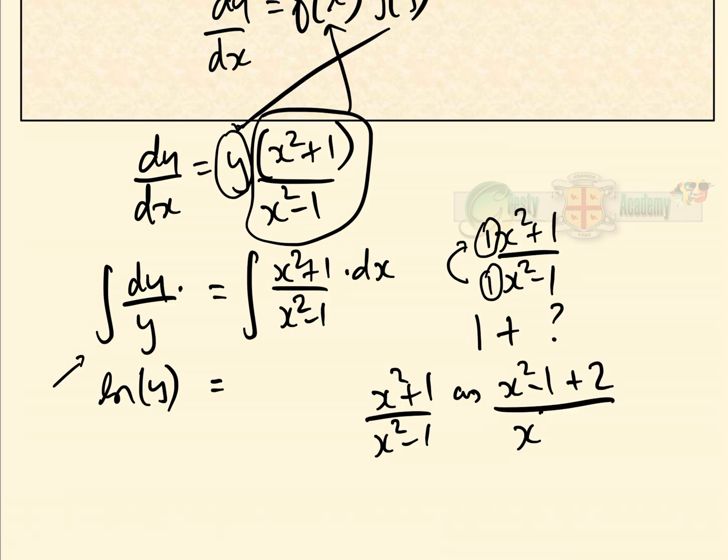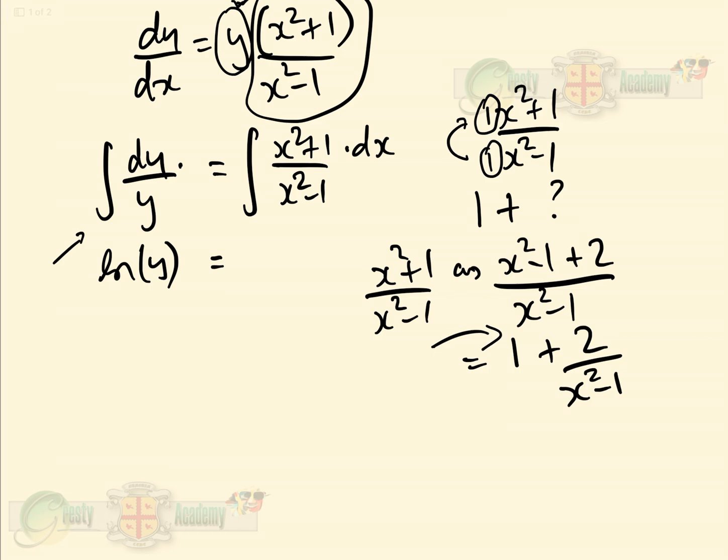We can then rewrite that as 1 + 2/(x² - 1). So we've managed to split it without actually doing the long division.